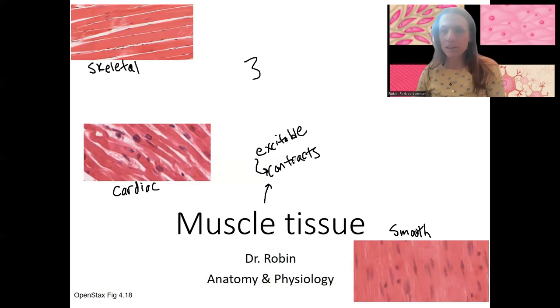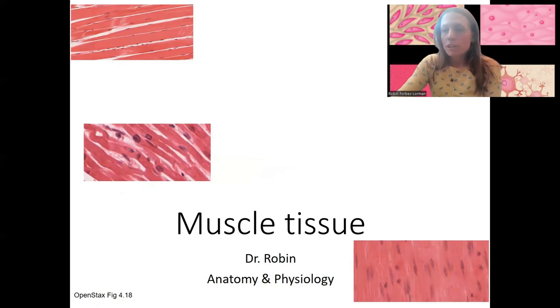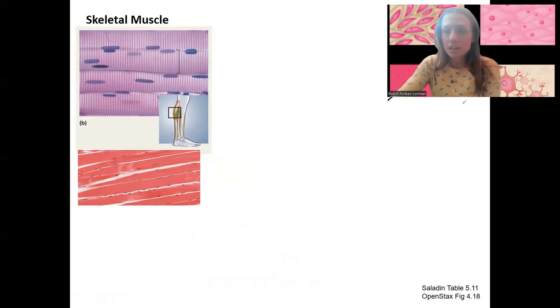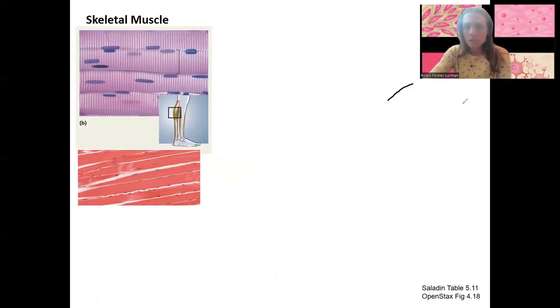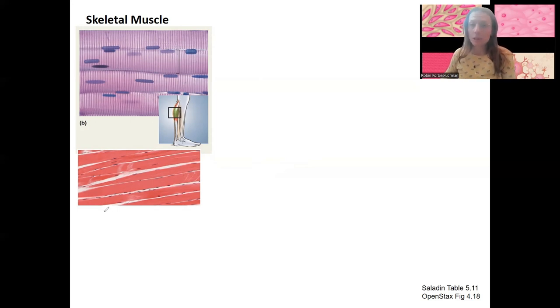We'll talk about this more when we get to skeletal muscle, and we'll discuss the details at the neuromuscular junction. Starting in a little more detail with skeletal muscle: it's attached to your bones to allow for movement. It's also important for maintaining posture, stabilizing joints, and producing heat. Those are some big functions of skeletal muscle.